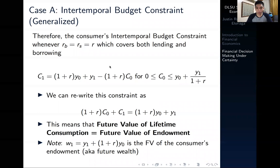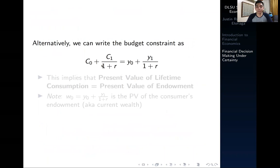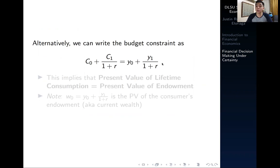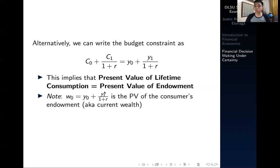We denote W1 as the future value of the consumer's endowment — the future wealth of the consumer. Alternatively, dividing both sides by 1 plus R gives: C0 plus C1 over 1 plus R equals Y0 plus Y1 over 1 plus R. This implies that the present value of lifetime consumption equals the present value of the endowment. We denote W0 as Y0 plus Y1 discounted by the interest rate — the present value of the consumer's endowment, effectively the consumer's current wealth.